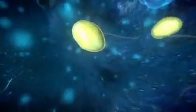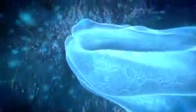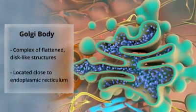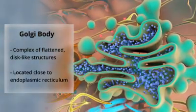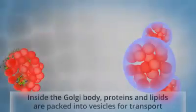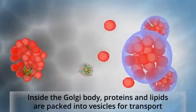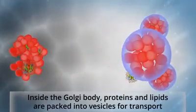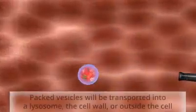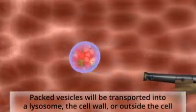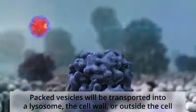An organelle closely related to the endoplasmic reticulum is the Golgi apparatus, or the Golgi body, a complex of flattened, disc-like structures located close to the endoplasmic reticulum. The Golgi apparatus receives proteins and lipids from the rough ER, modifies and sorts them, and then packs them into vesicles to be sent to their final destinations within the cell. These vesicle packages will either be sent to lysosomes, the plasma membrane of the cell, or they can be transported across the cell membrane and sent outside of the cell.